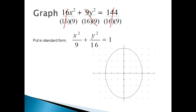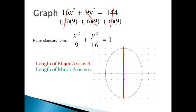Here's the graph. The major axis length is 8 — take the square root of 16 to get 4, then place 4 on each side of the center, for a total of 8. The minor axis is 6 — take the square root of 9 to get 3, and place 3 on each side of the center, for a total of 6. Basically, to find the major and minor axis lengths, take the square root of the a or b value and double it.